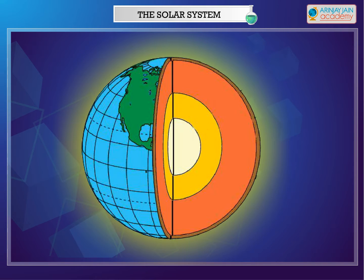The Earth is broadly divided into three layers: crust, mantle, and core.